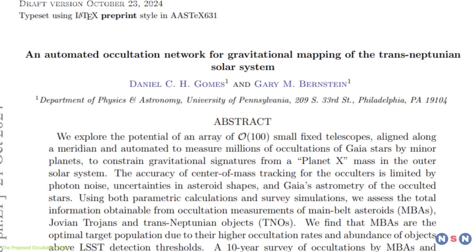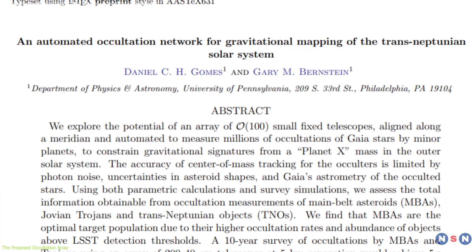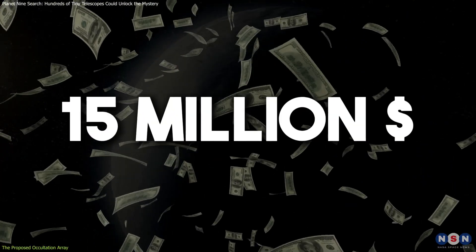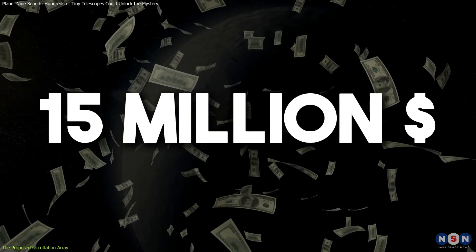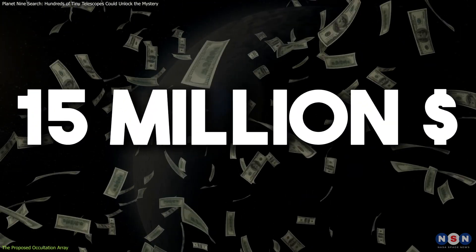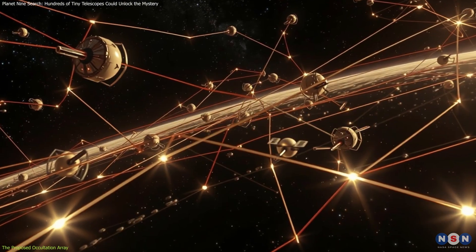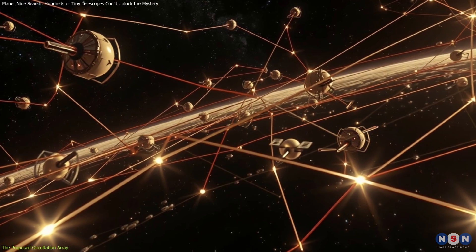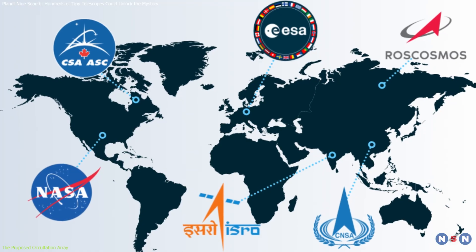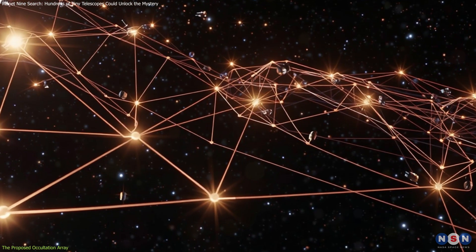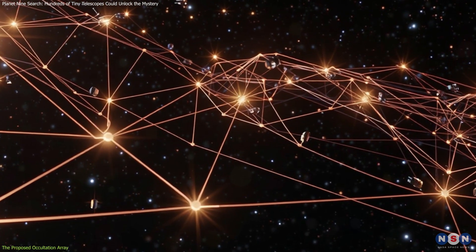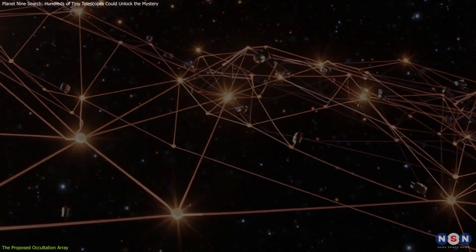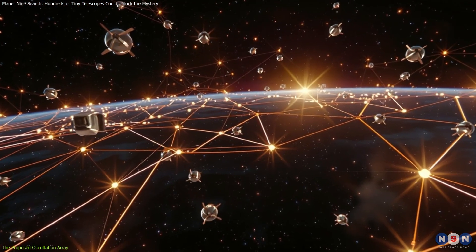One of the most exciting aspects of this project is its affordability. The estimated cost of $15 million is remarkably low for an astronomical undertaking of this scale. This makes the project feasible and accessible, even for smaller institutions and international collaborations. Furthermore, the modular nature of the array ensures scalability and adaptability, allowing for future upgrades or expansions.